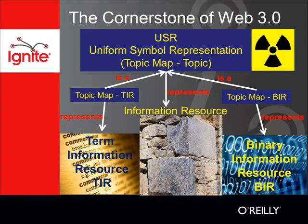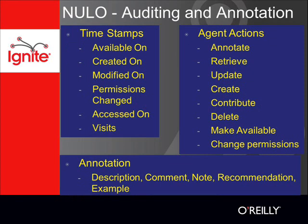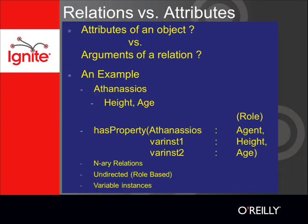In NewLaw a topic represents an information resource, but there is an explicit distinction between a binary information resource and the notion of a term. In direct analogy to URL, Uniform Symbol Representation (USR) is the cornerstone of Web 3 — USR references everything, including files and web pages. Therefore NewLaw vocabulary includes those terms and relations between them that are necessary for auditing and annotating purposes. NewLaw also intuitively suggests new ways for modeling n-ary undirected relations, introducing the variable term and the role of attributes as arguments in a relation.